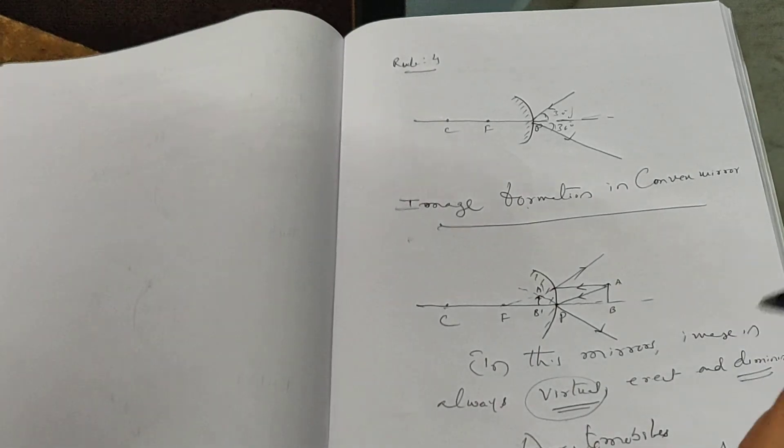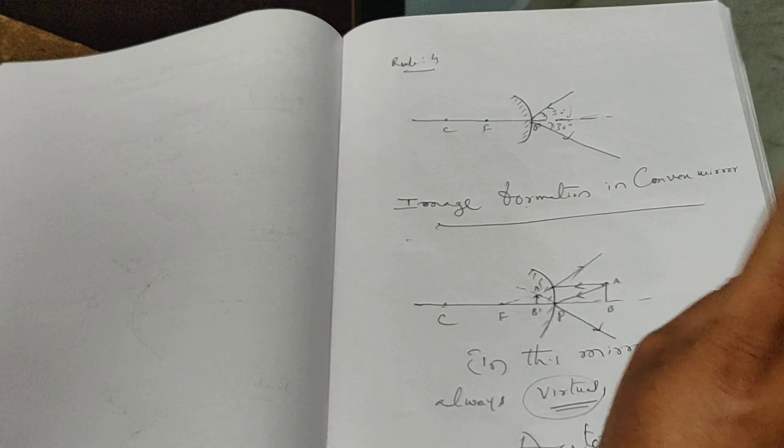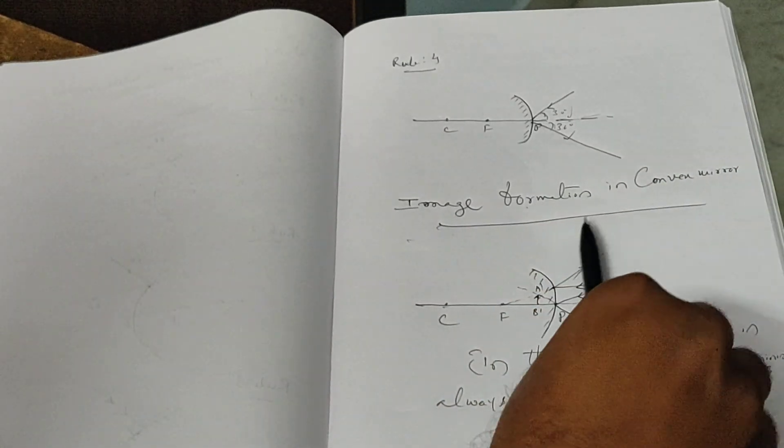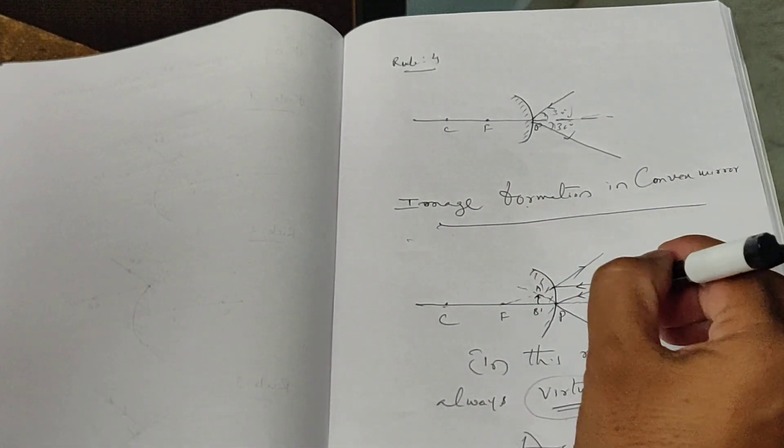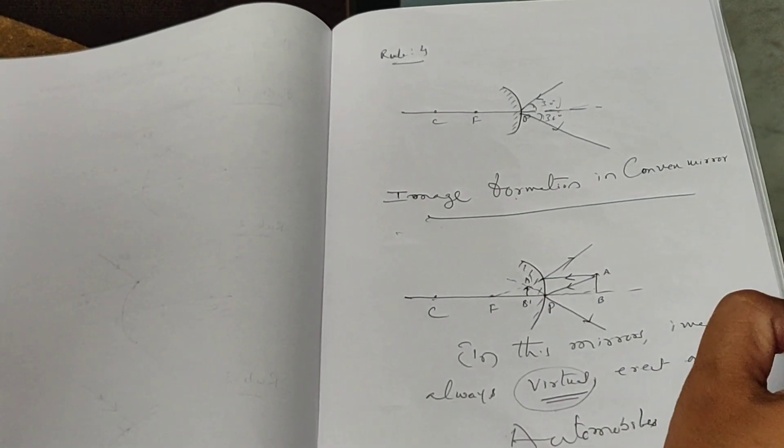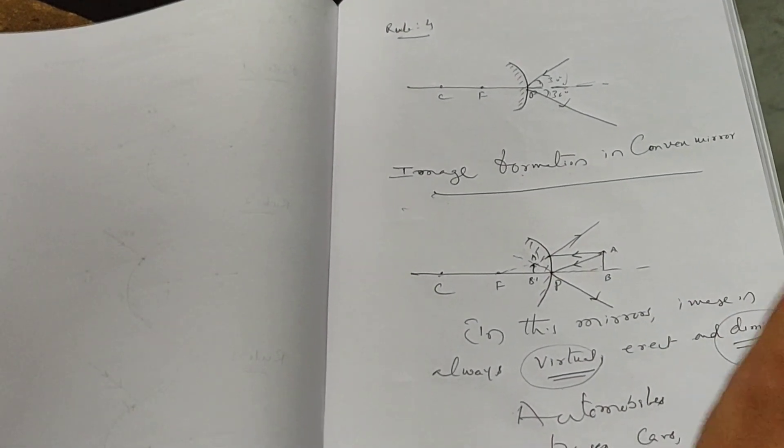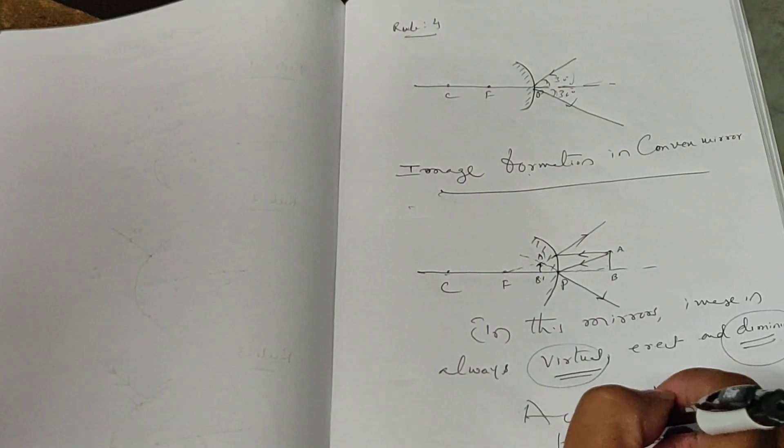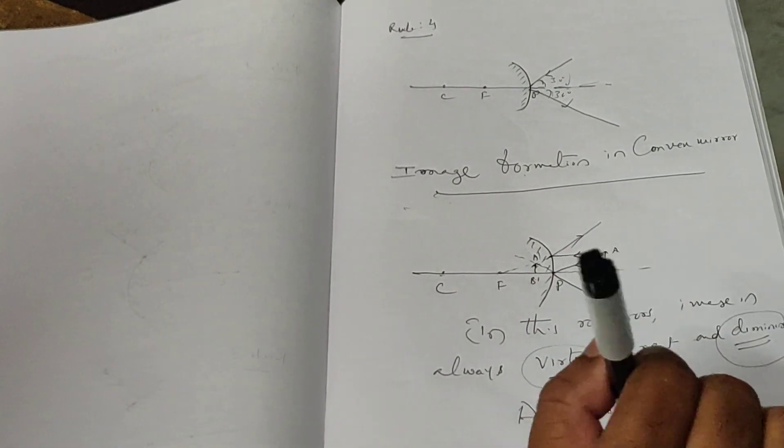In case of convex mirrors, we are not having different cases, only one case. Wherever you keep the object, we get the same image: virtual, erect, and diminished, that is small in size, which is mostly used in automobiles. Thank you.